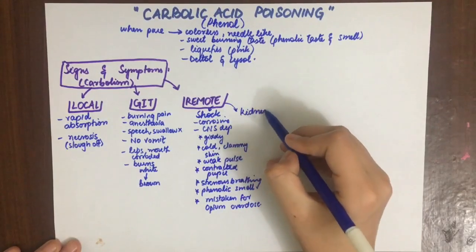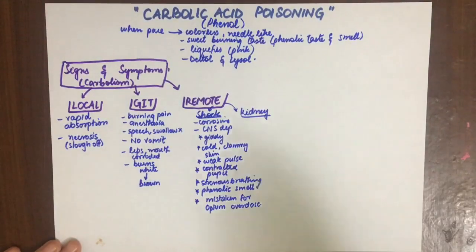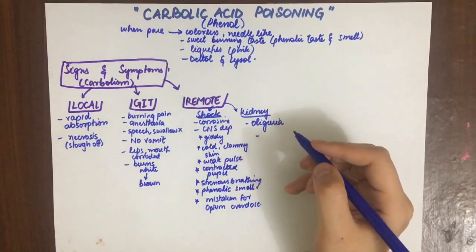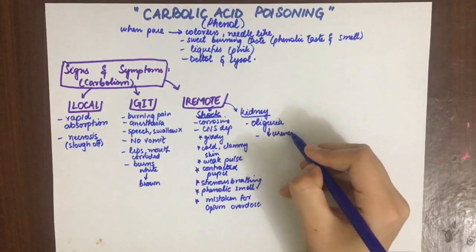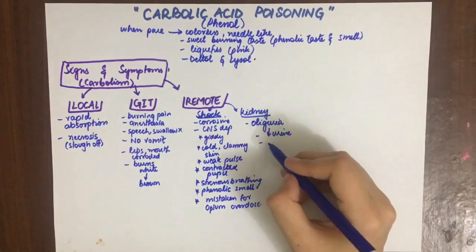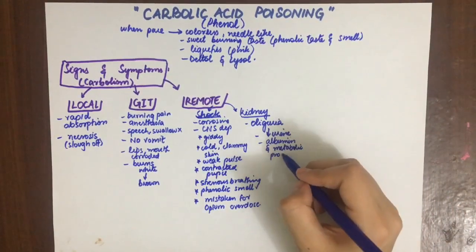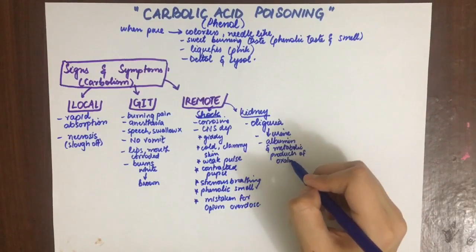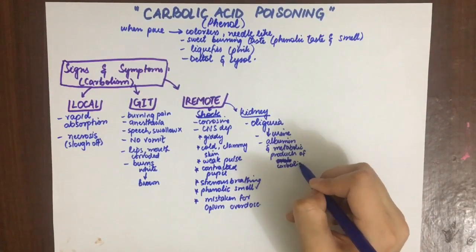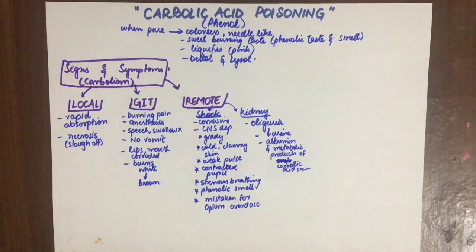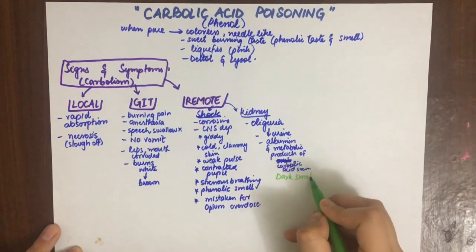Carbolic acid also causes kidney damage and causes oliguria. There is albumin and metabolic products of carbolic acid metabolism — for example hydroquinones and pyrocatechols — seen in the urine. There is dark smoky green urine, to which coma and death follows.